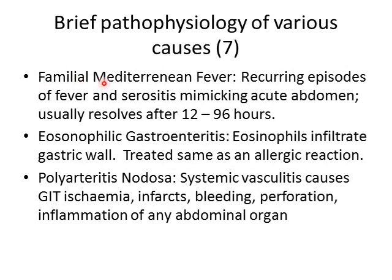Familial Mediterranean fever is a genetic disorder occurring in ethnic groups from around the Mediterranean such as Jews, Lebanese, Egyptians, and Greeks. These patients get recurring episodes of fever and inflammation of the lining of abdominal organs, which can be so severe it mimics an acute abdomen. However, the pain resolves in 12 to 96 hours with pain medications and anti-inflammatories — no surgery required. Eosinophilic gastroenteritis occurs when excess eosinophils invade the gastric wall and can be treated similarly to an allergic reaction. There is often a family or personal history of allergies.